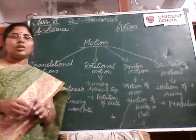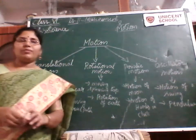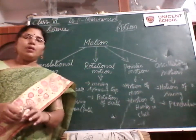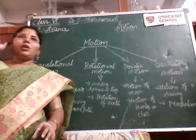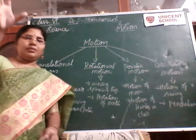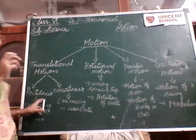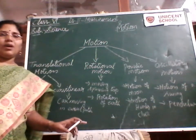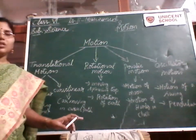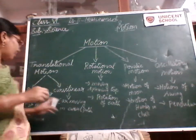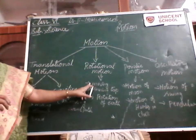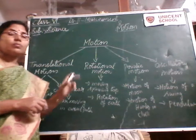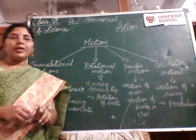Think of cricket. When the cricketer throws a ball and the batsman hits it, the ball travels in a straight path — that is rectilinear motion. But the ball also starts rotating and spinning while travelling forward in the straight path. So both rectilinear and rotational motion take place when a cricketer hits a ball.